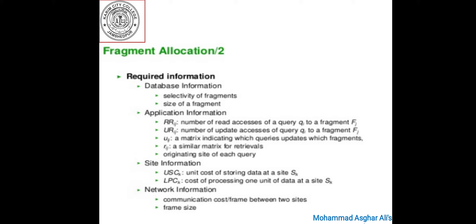The third point is site information. For each computer site we need to know its storage and processing capacity. These values can be computed by means of elaborate functions or by simple estimates. The unit cost of storing data at site Sk is denoted as USC(k). There is also a need to specify the cost measure LPC as the cost of processing one unit of work at site Sk, where the work unit is identical to that used in the R and U measures.